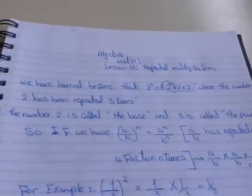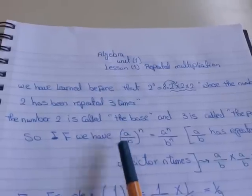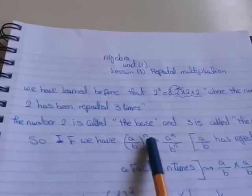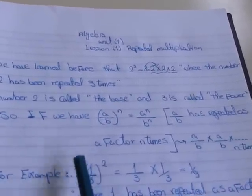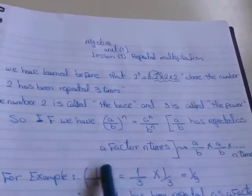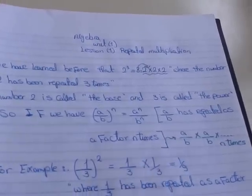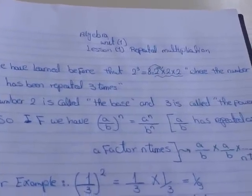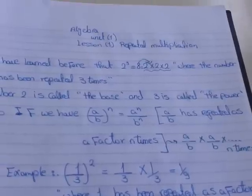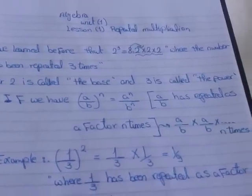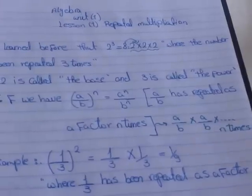So if we have a rational number in the form a over b, all to the power n, that means a over b will be repeated n times: a over b times a over b times a over b, and so on.